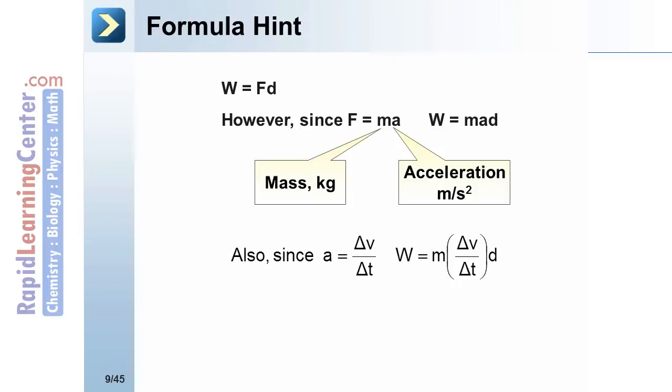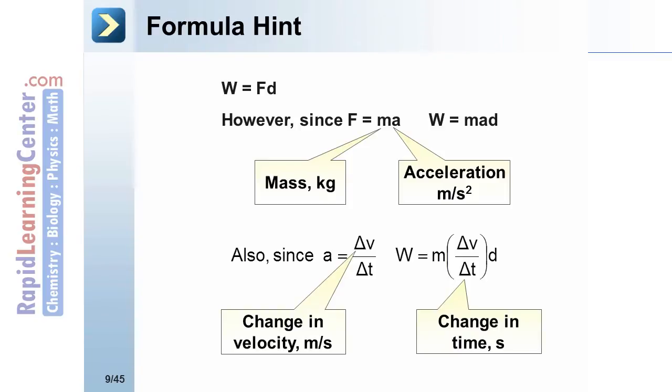Additionally, if A isn't known, delta V over delta T can be used. Thus, work equals mass times delta V over delta T divided by distance.